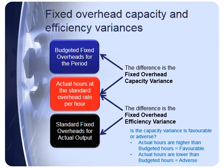We need to think about how we decide whether the capacity variance is favourable or adverse. We do that by comparing actual hours incurred with budgeted hours. Where actual hours are higher than budgeted, that gives a favourable variance, because we're spreading those fixed overheads across a wider range of hours. Conversely, where actual hours are lower than budgeted hours, that will lead to an adverse fixed overhead capacity variance.